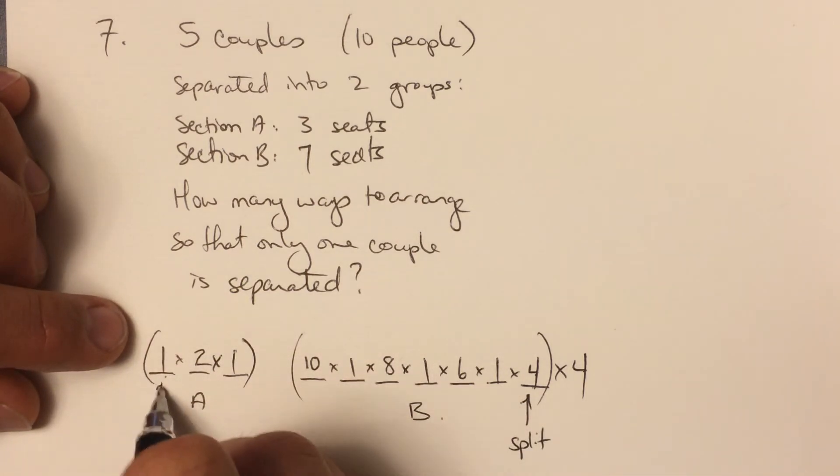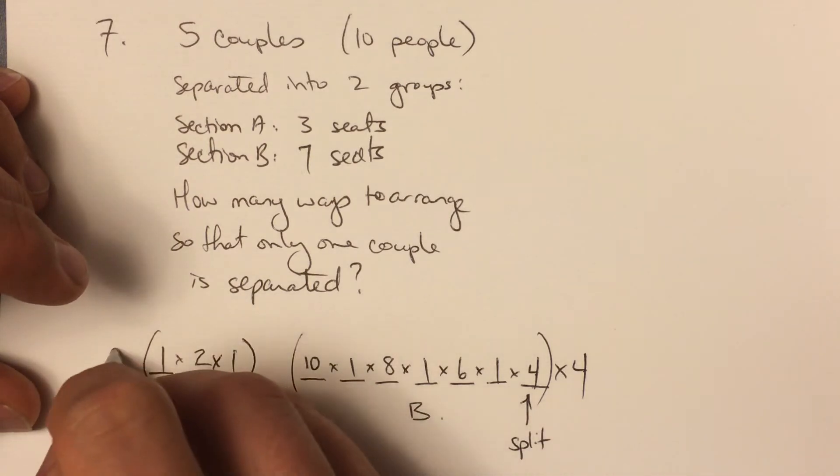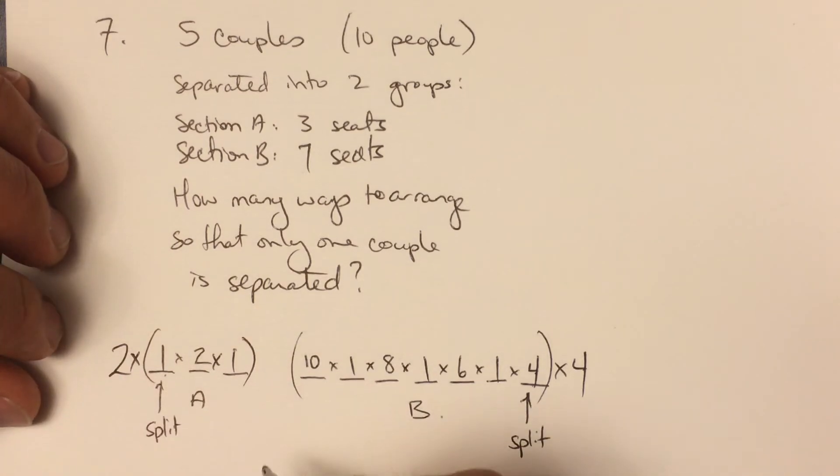And once again, I don't have to put that split person here on this end. I could have put them at the other end and left these first two seats for the couple that is together. So we have two places that could have happened.